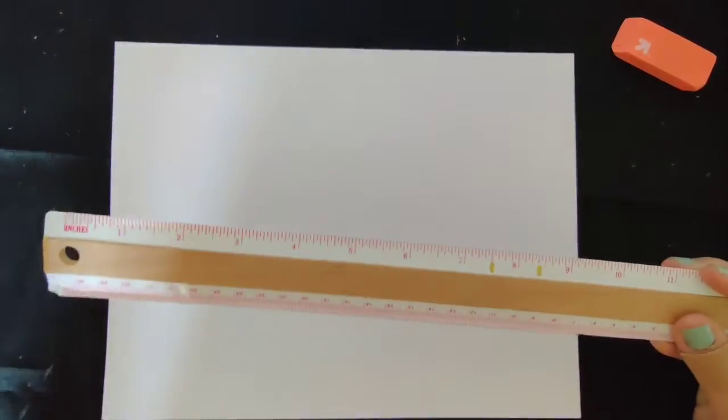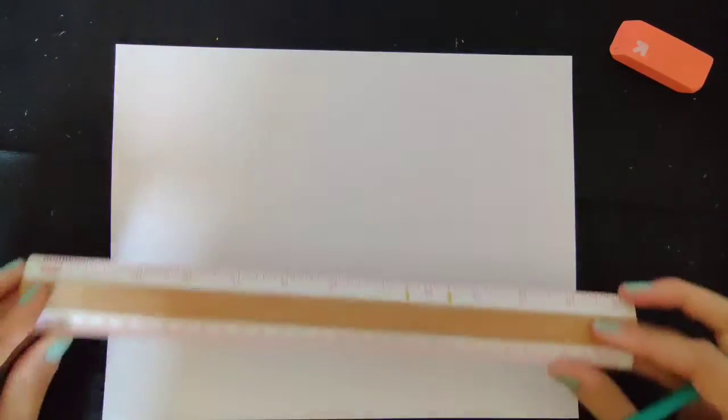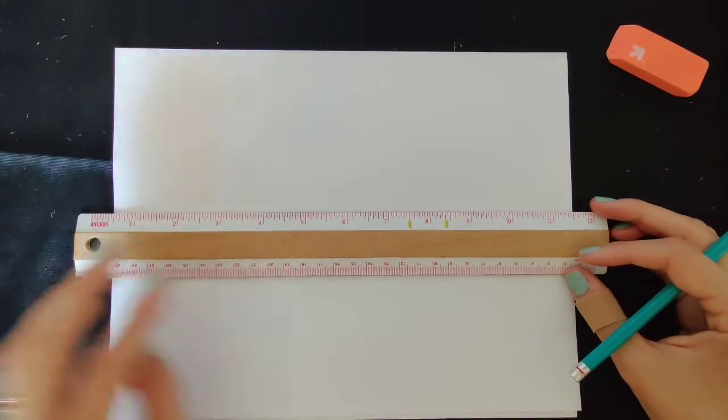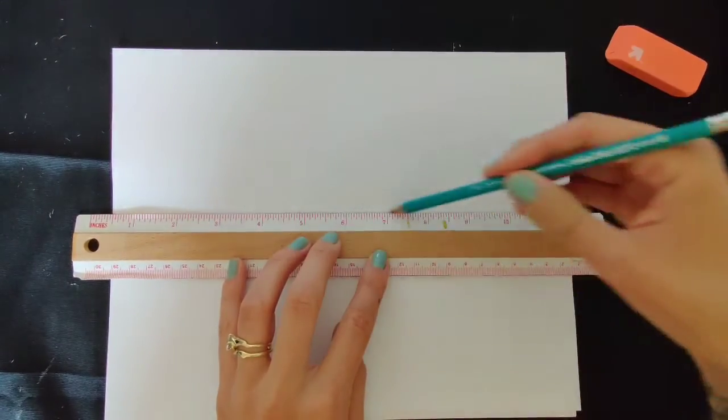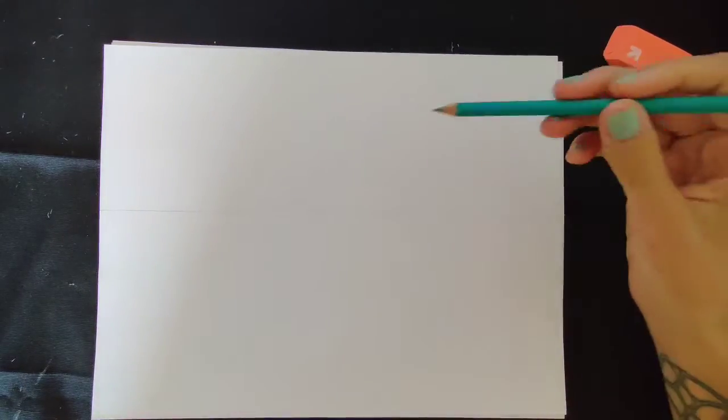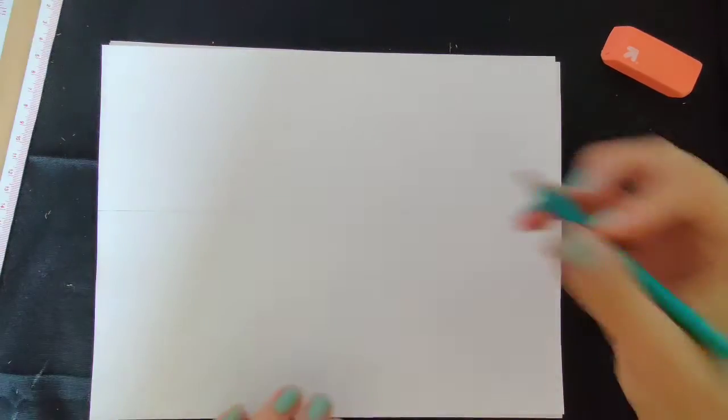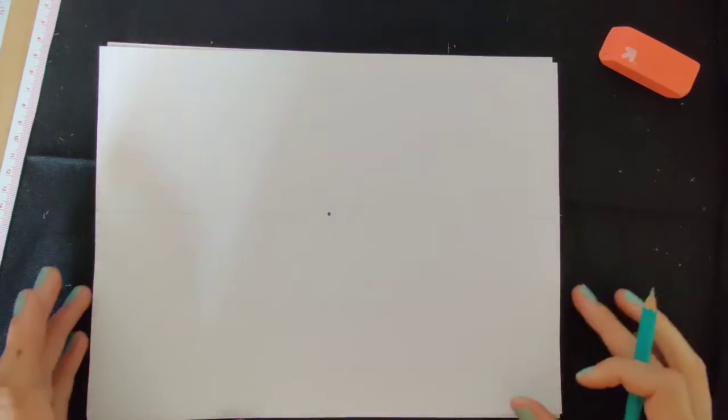If you do not have a ruler you can use the edge of your book or a notebook, anything that has a flat surface. First thing is drawing a horizon line. I'm going to place my ruler across my paper and just draw a very light line across. The horizon line is the separation between the sky and the ground. Now I will draw my vanishing point.